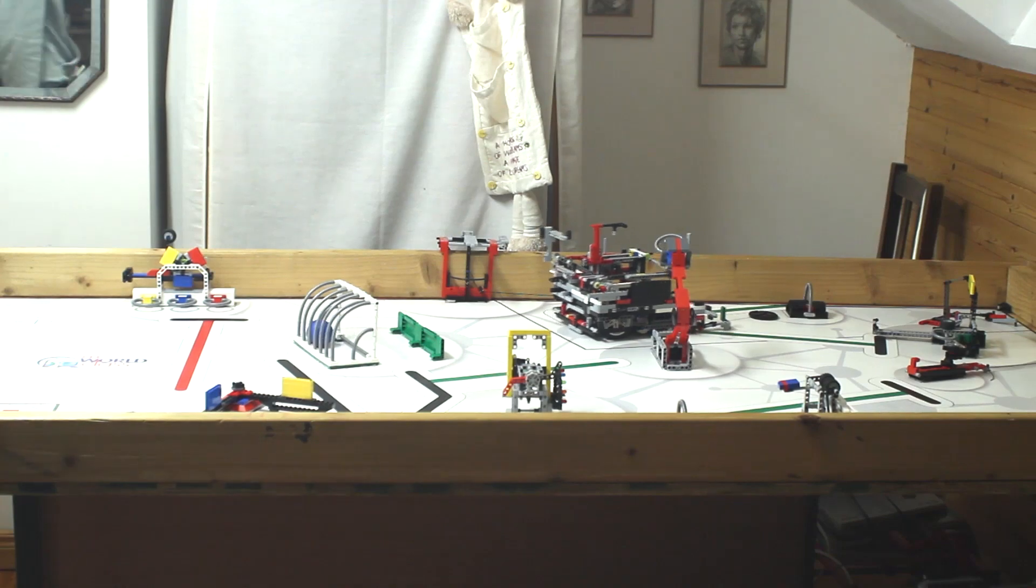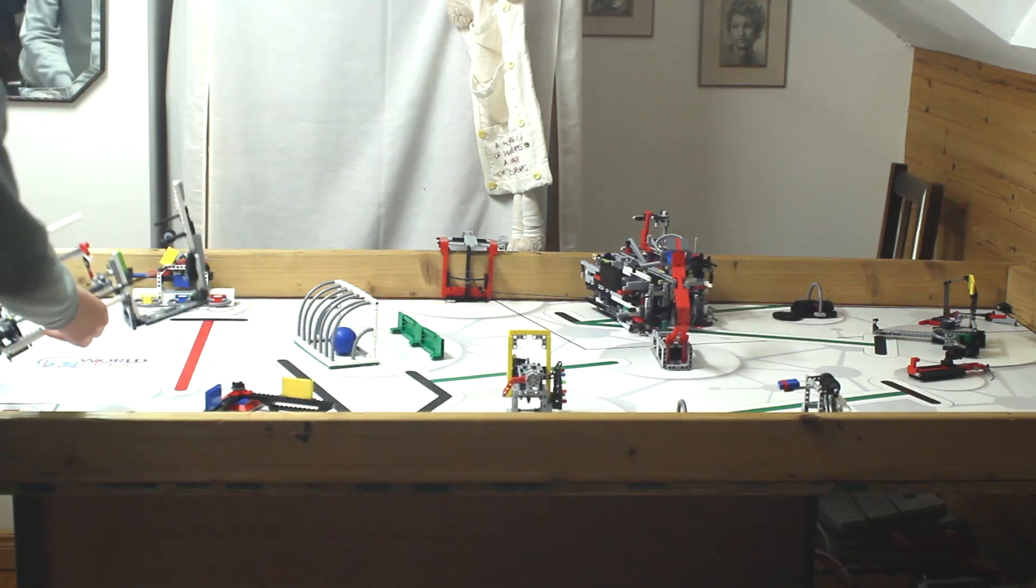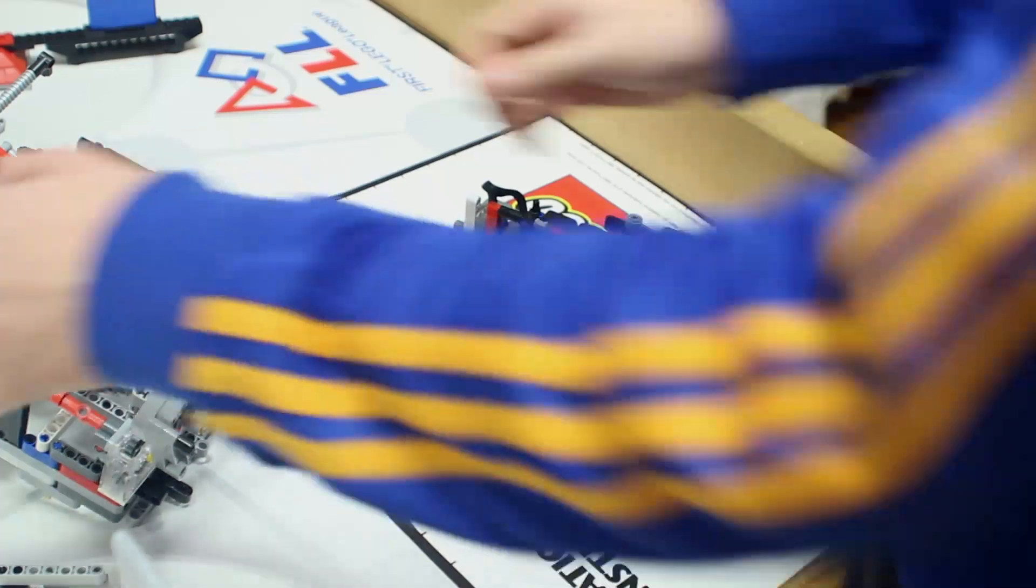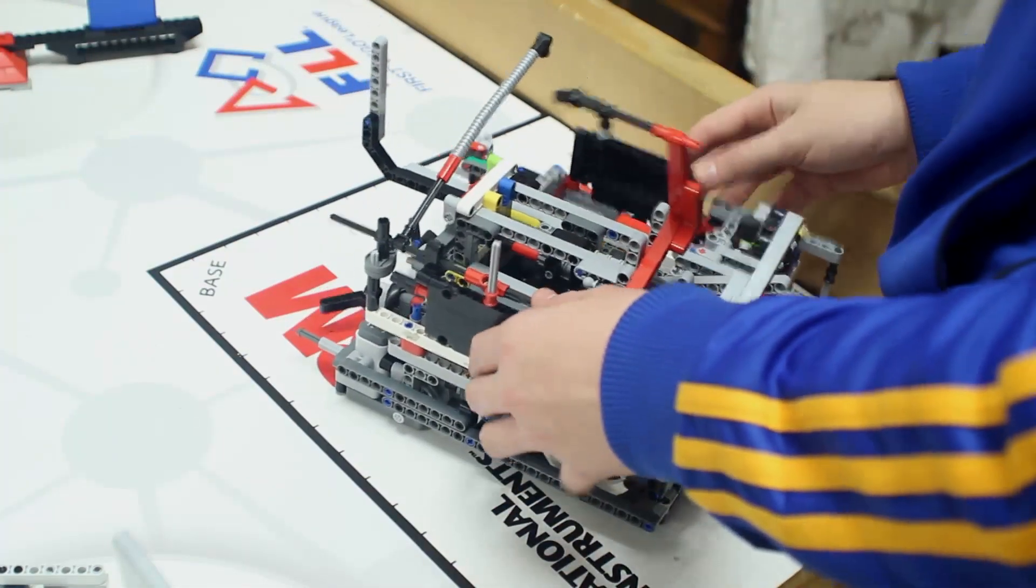The first run is our long run, completing almost all missions on the east end of the table. The attachment comes on and off very easily just like this.